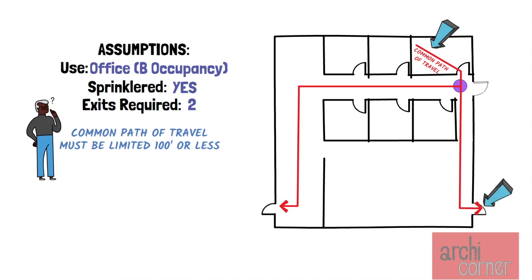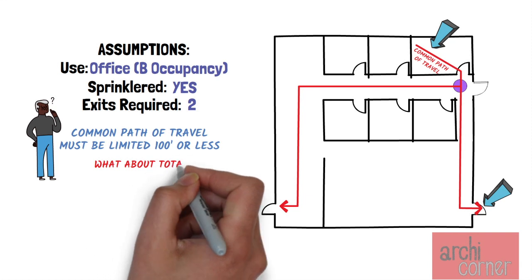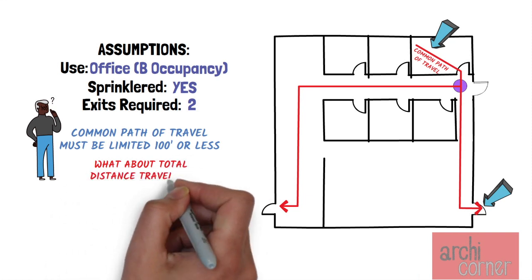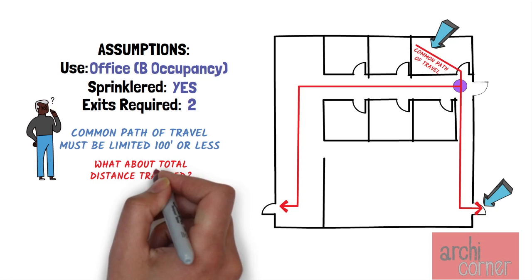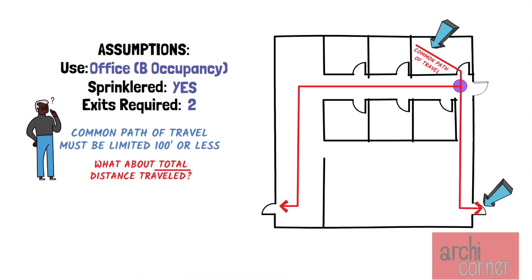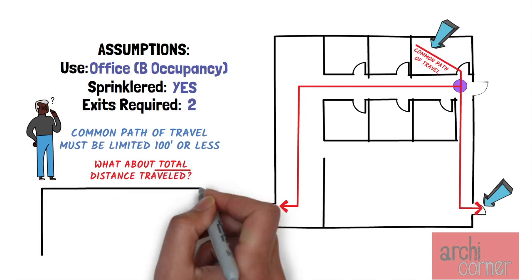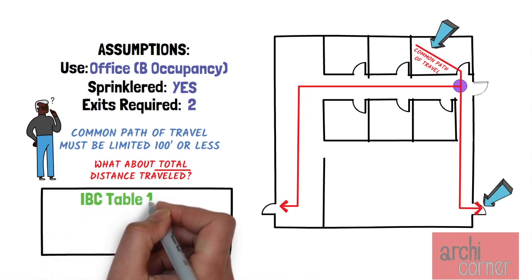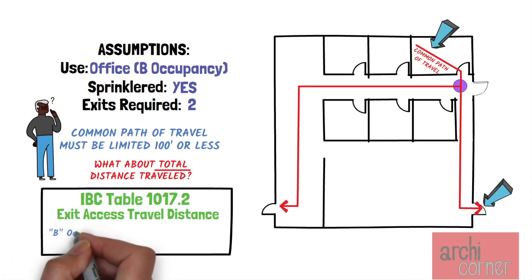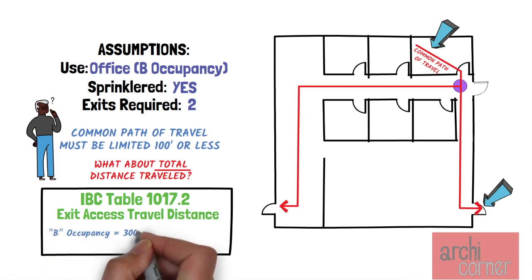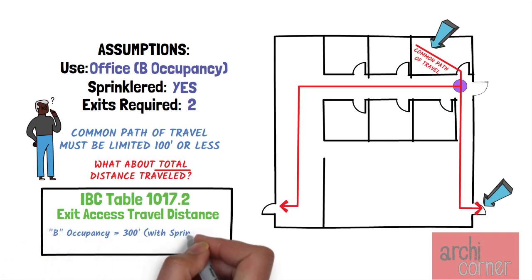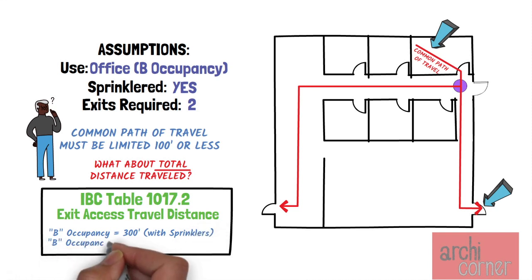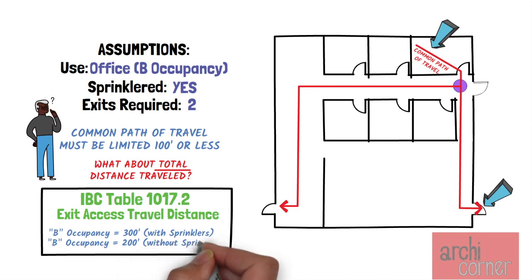We have discussed the issue of common path of travel, but what about the rest of the path of travel? Is there a limitation to the total distance traveled? The total distance traveled is limited to the distances noted in IBC Table 1017.2, which for an office is limited to 300 feet if the building is sprinklered. If the building is not sprinklered, the total travel distance would be limited to 200 feet.